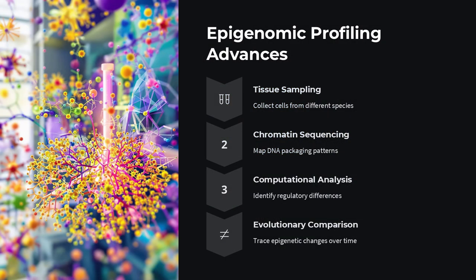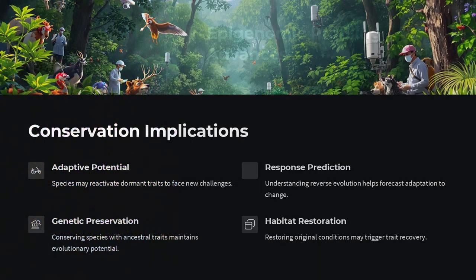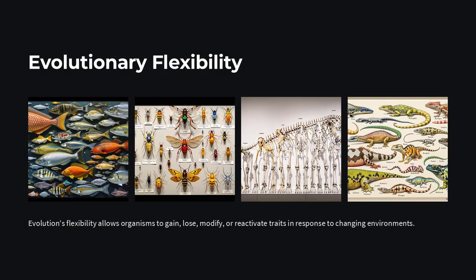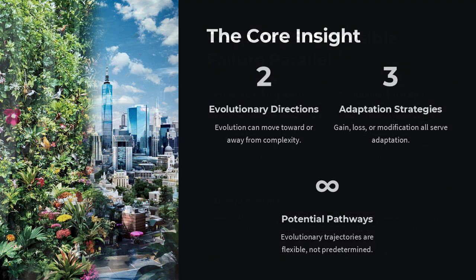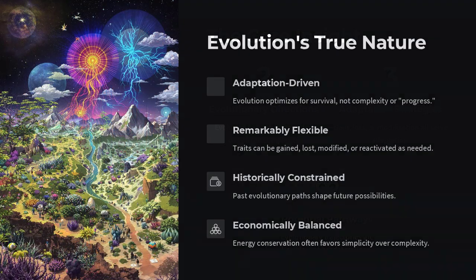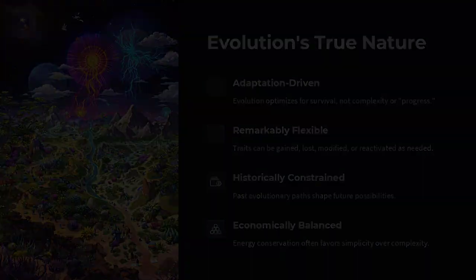In essence, the reverse evolution mystery is not a literal undoing of evolutionary progress, but a testament to evolution's flexibility. Loss can be as adaptive as gain. Much like the hysteresis paradox reveals how history shapes system responses, reverse evolution highlights that complexity itself can become a liability, and shedding it may be nature's most expedient route to survival.